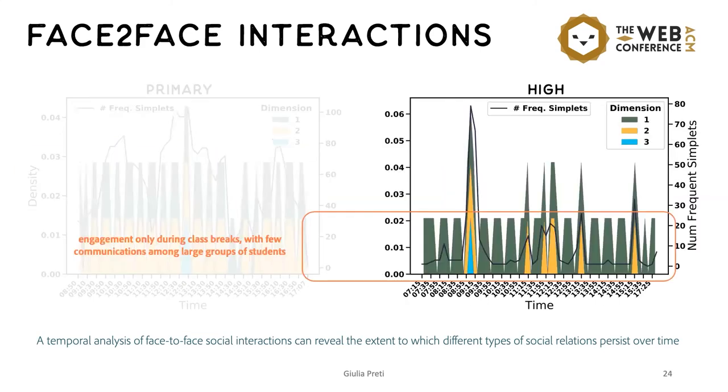Instead, in the high dataset, we can observe more differences between class time and breaks. During class, only the one-dimensional simplets are frequent, which indicate interactions that happen basically between children sitting in adjacent desks. While on the other end, during lunch and class breaks, we can see more higher order interactions.